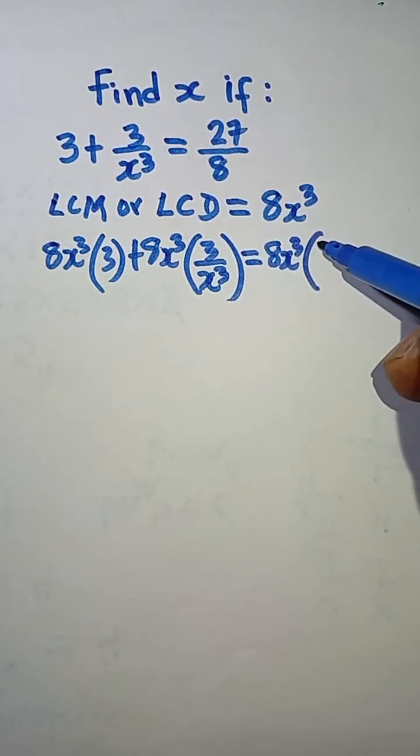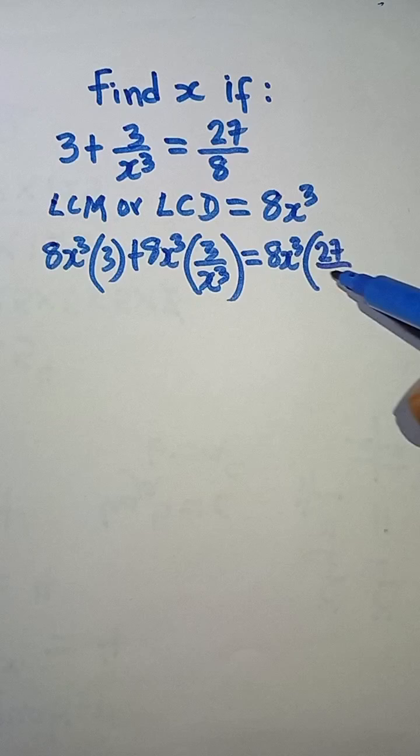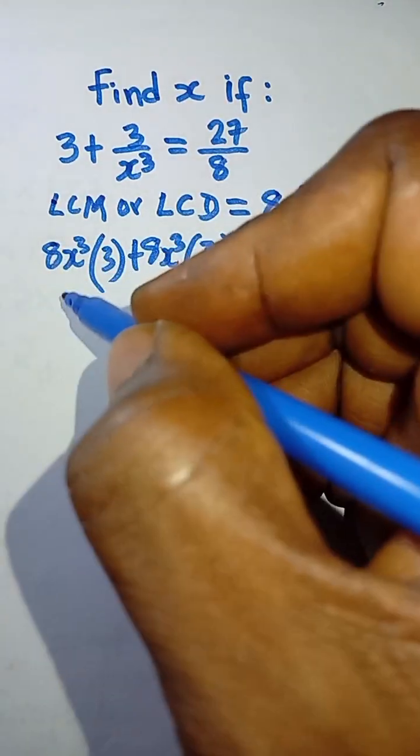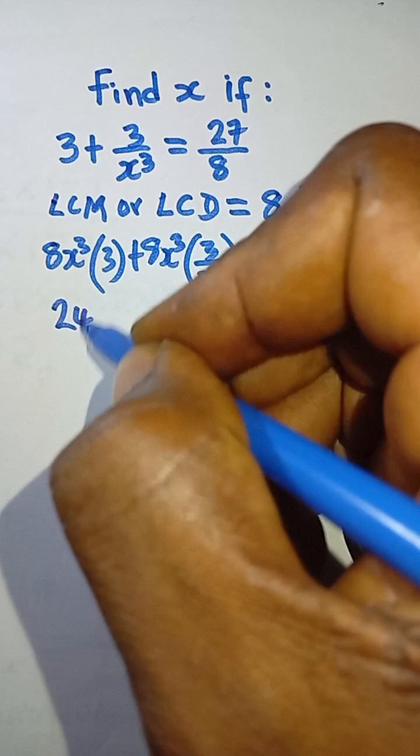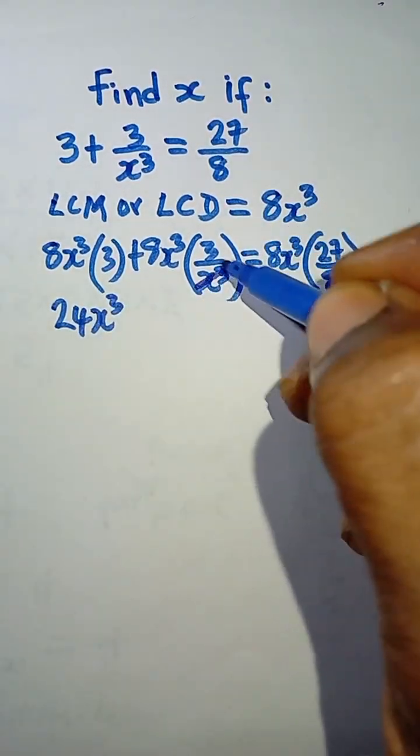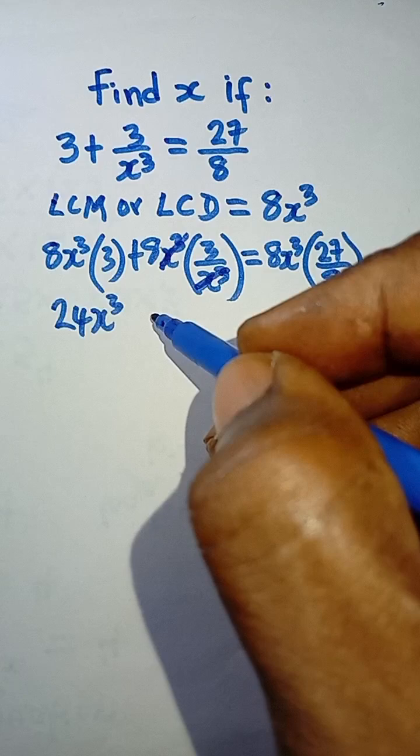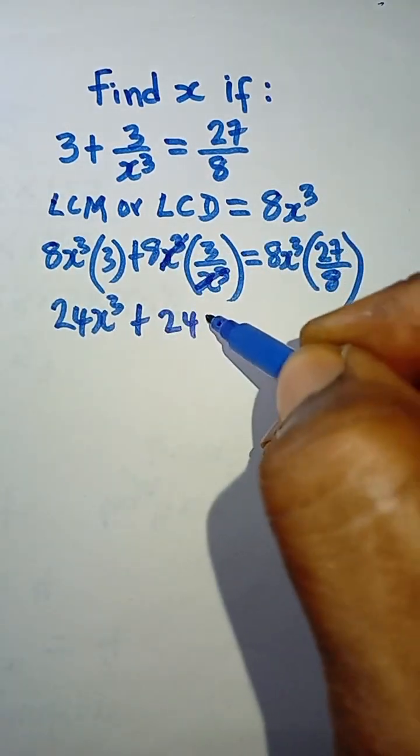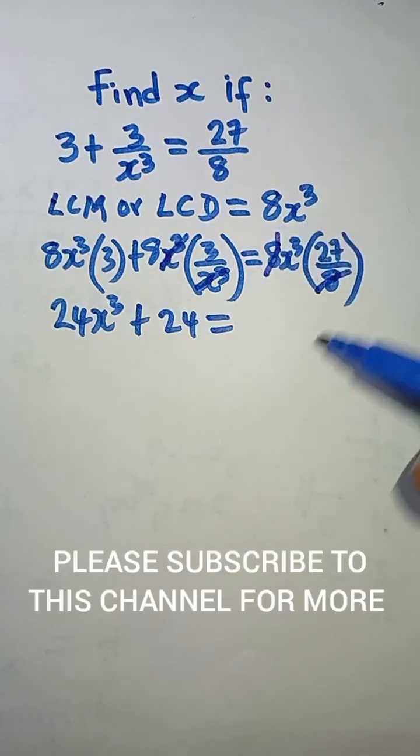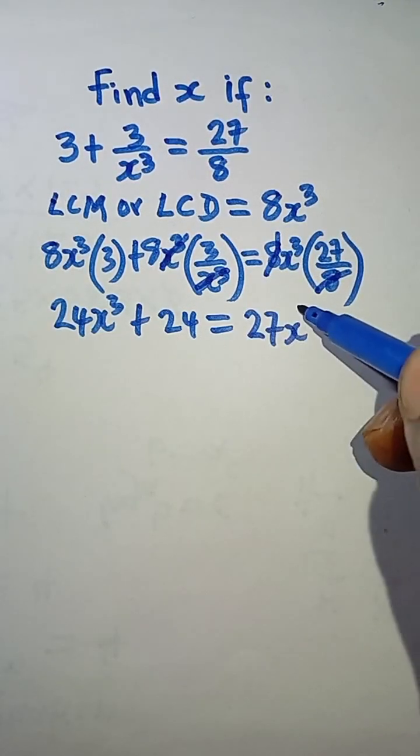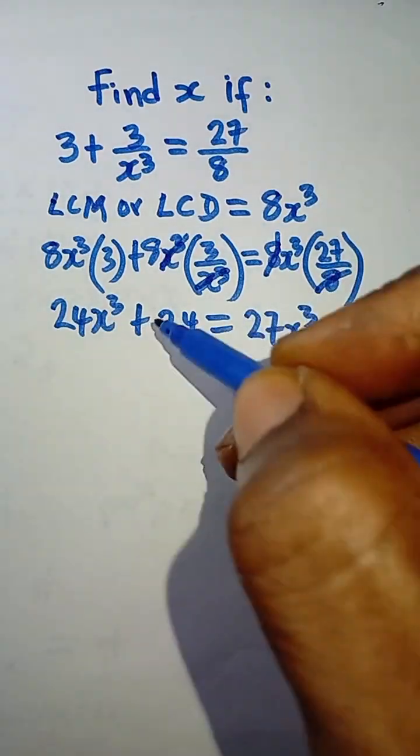So 8 multiplied by 3 is 24. So we have 24x cubed. This x cubed will cancel x cubed. So we have plus 8 times 3, 24, is equal to, cancel 8, and you are left with 27x cubed. So these two are like terms.